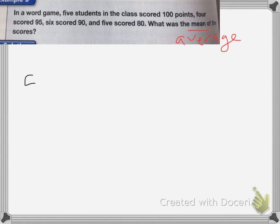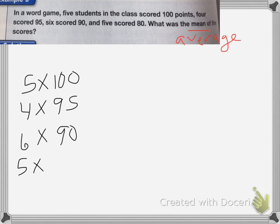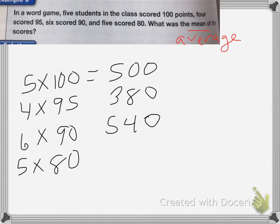Five people scored 100 points. I'm going to do five times 100, four scored 95, six scored 90, and five scored 80. I want to find the mean of all the scores. If I multiply those, I get 500, 380, 540, and 400.